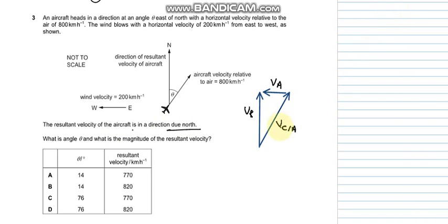Let's make up a triangle. This is our vector triangle - this is the velocity of the aircraft relative to air, this is the velocity of air which is 200, this is 800, and we need to find VR. This makes 90 degrees, so that's a right angle triangle. VR can be found from Pythagoras theorem: VR equals square root of 800 squared minus 200 squared.